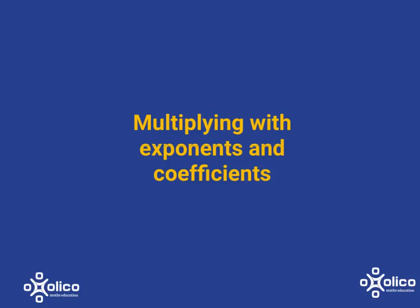We've looked at multiplying with exponents and have a rule for dealing with that, but let's just have a quick look at what happens in slightly more complicated examples where you've got different letters and you also have some coefficients.